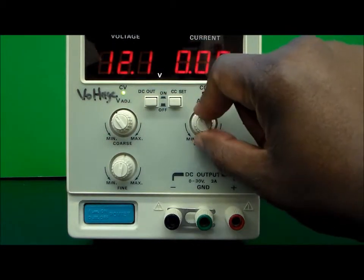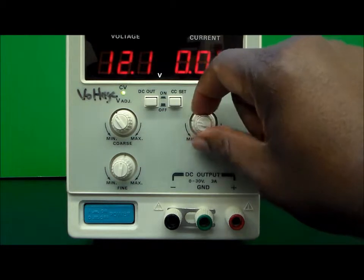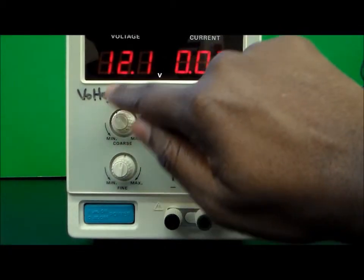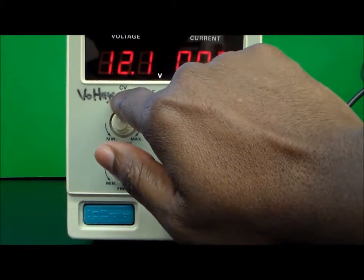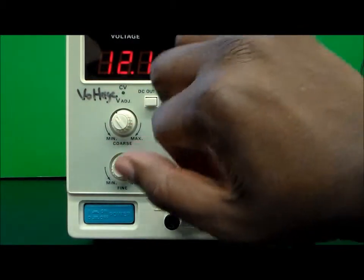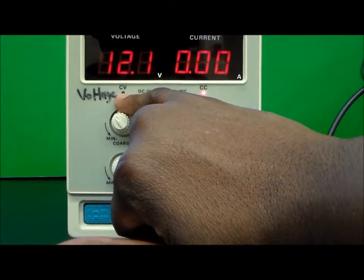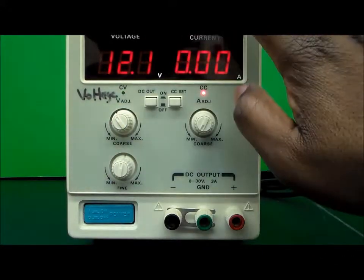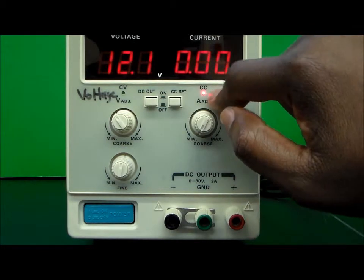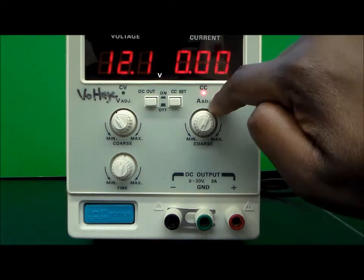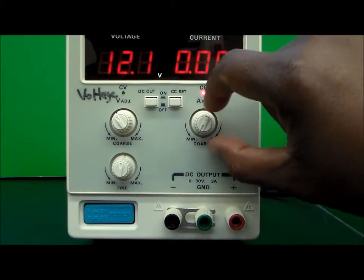This one here adjusts the current for the power supply. We also have a couple of LEDs here at the top. One LED indicates when we have a constant voltage being produced by the power supply, and this one indicates when we have a constant current being produced by the supply.